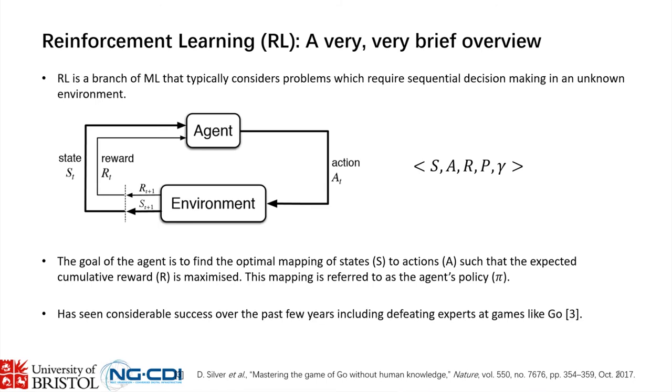Now we move on to our first sub-topic: cooperative multi-agent reinforcement learning. In this domain, we are interested in getting groups of agents or robots to work together to accomplish some task. Before that, a brief overview of reinforcement learning in a bit more detail. RL is a branch of machine learning that typically considers problems requiring sequential decision-making within an unknown environment. Problems are usually modeled as what's known as a Markov decision process.